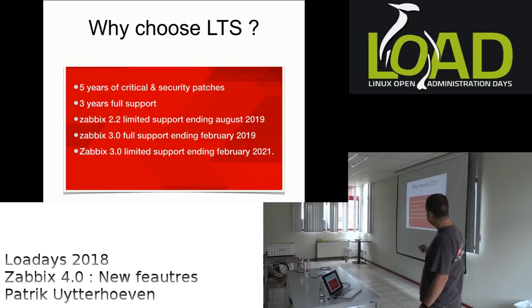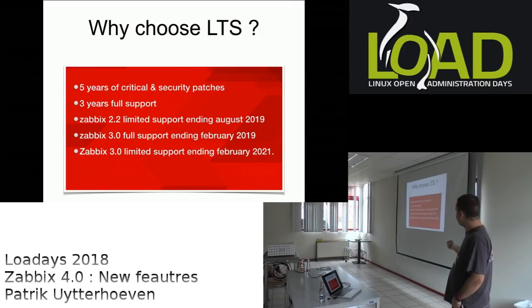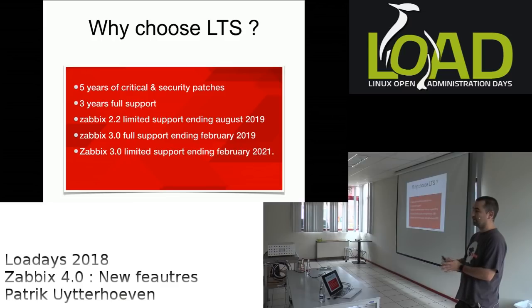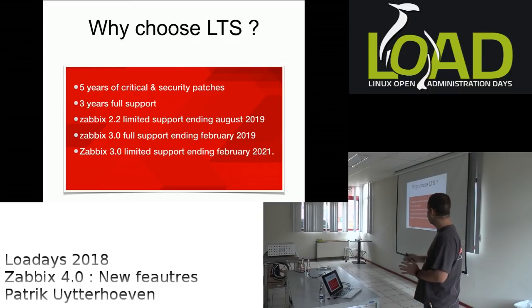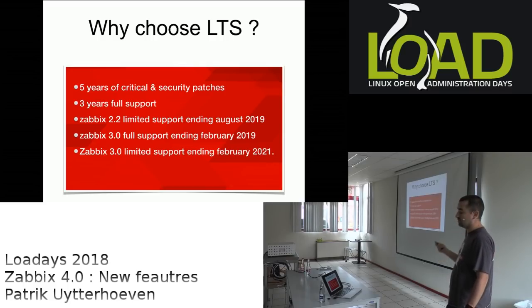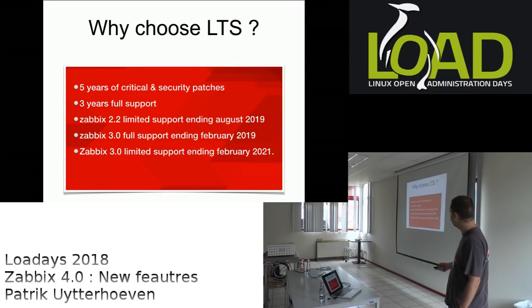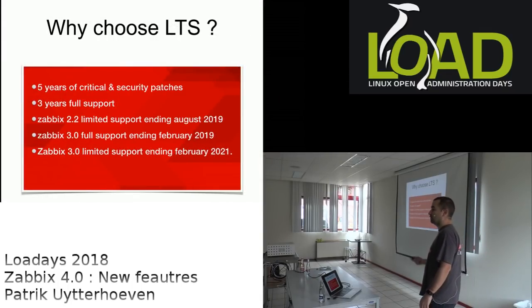Why choose LTS? You get five years of critical support and security patches, and three years of full support. Full support means that besides critical and security patches you also get minor improvements. The 2.2 version has limited support ending in August 2019, so you have about one year to migrate. Zabbix 3.0 full support ends February 2021 — so you still have a long runway if you want to stick with bug fixes.